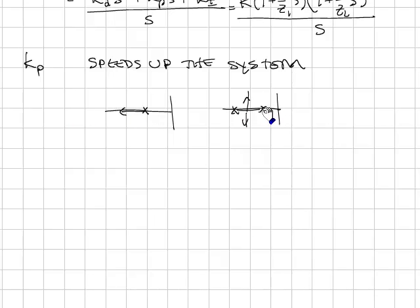If you have a second-order system, the system gets faster and then eventually starts oscillating. So in general, KP is used to speed up the system.